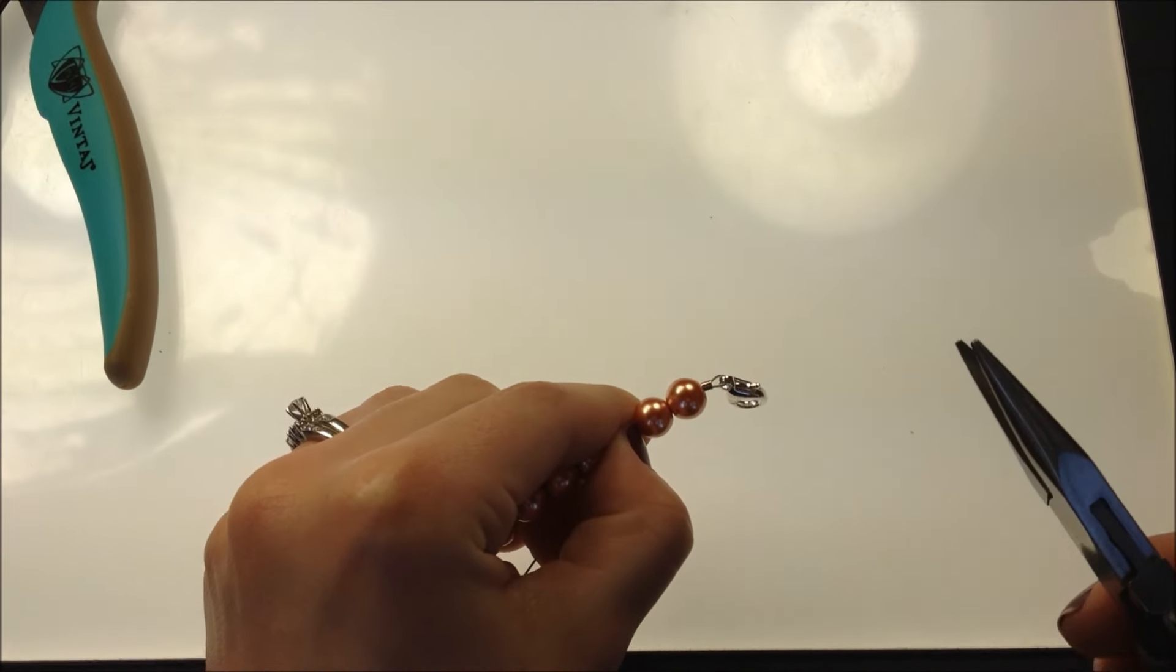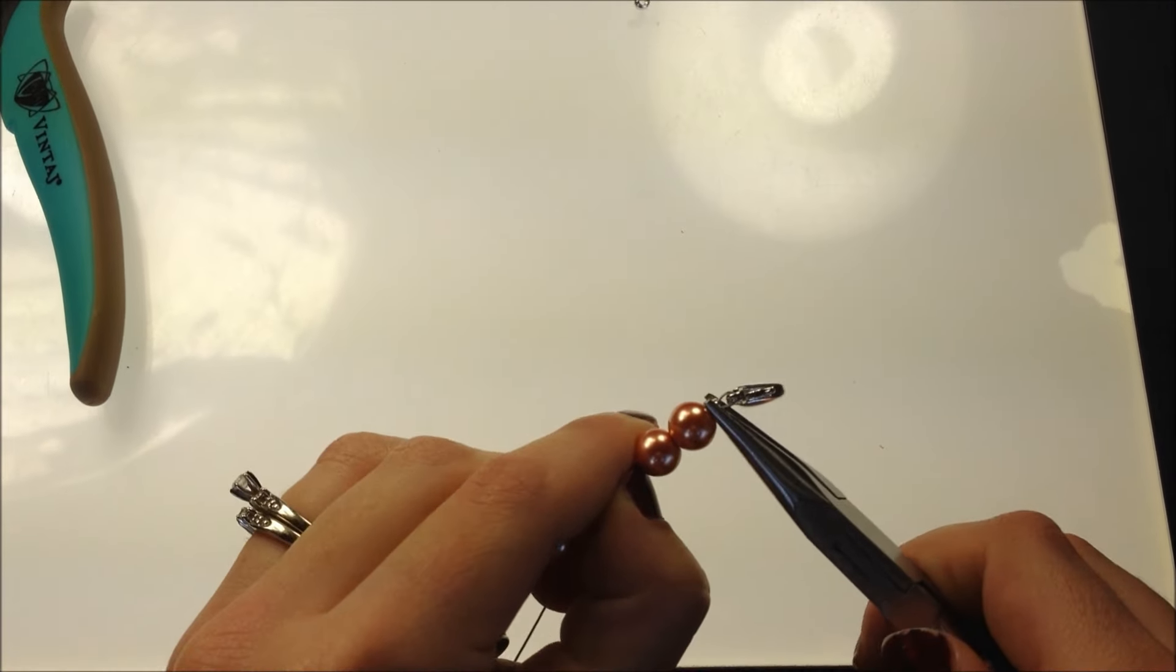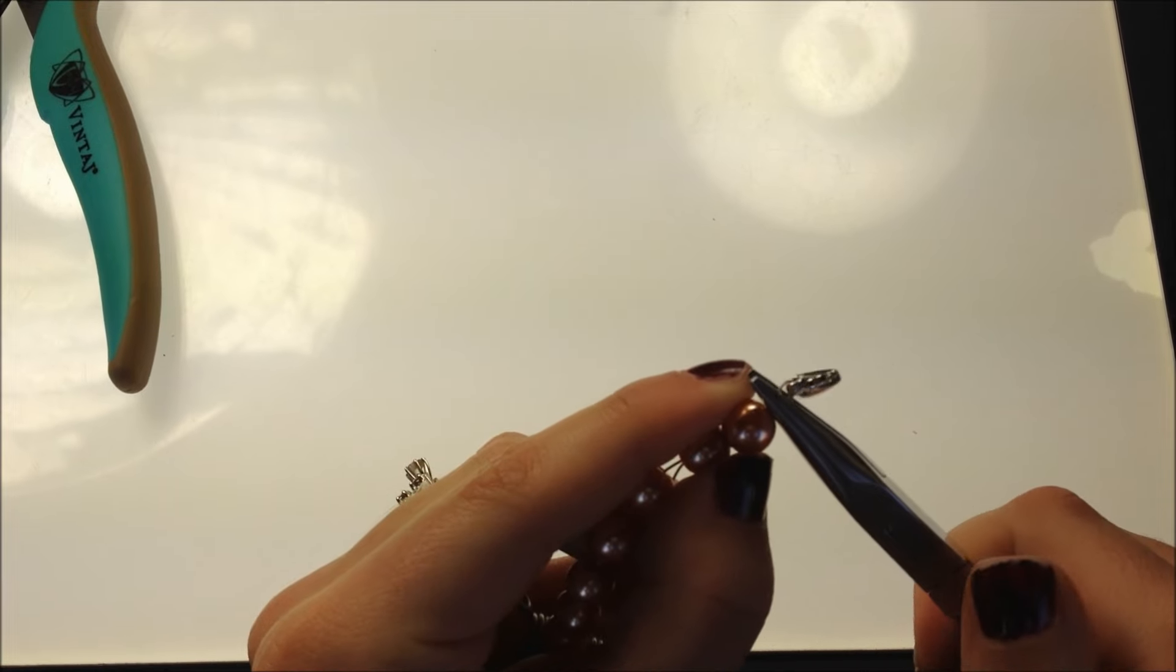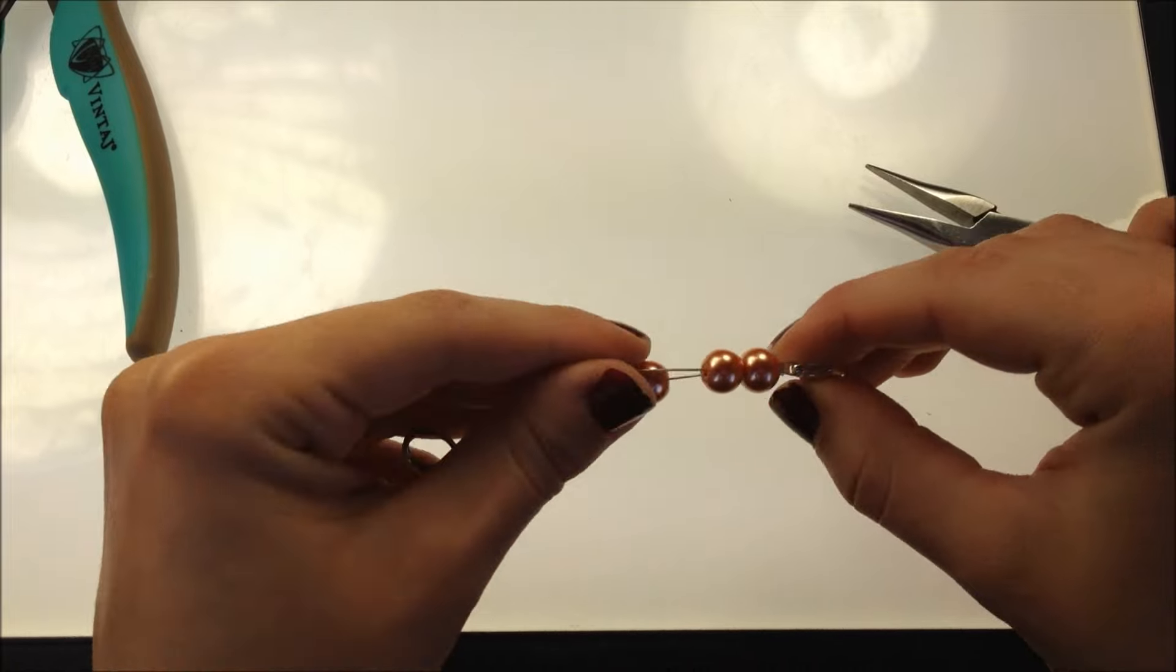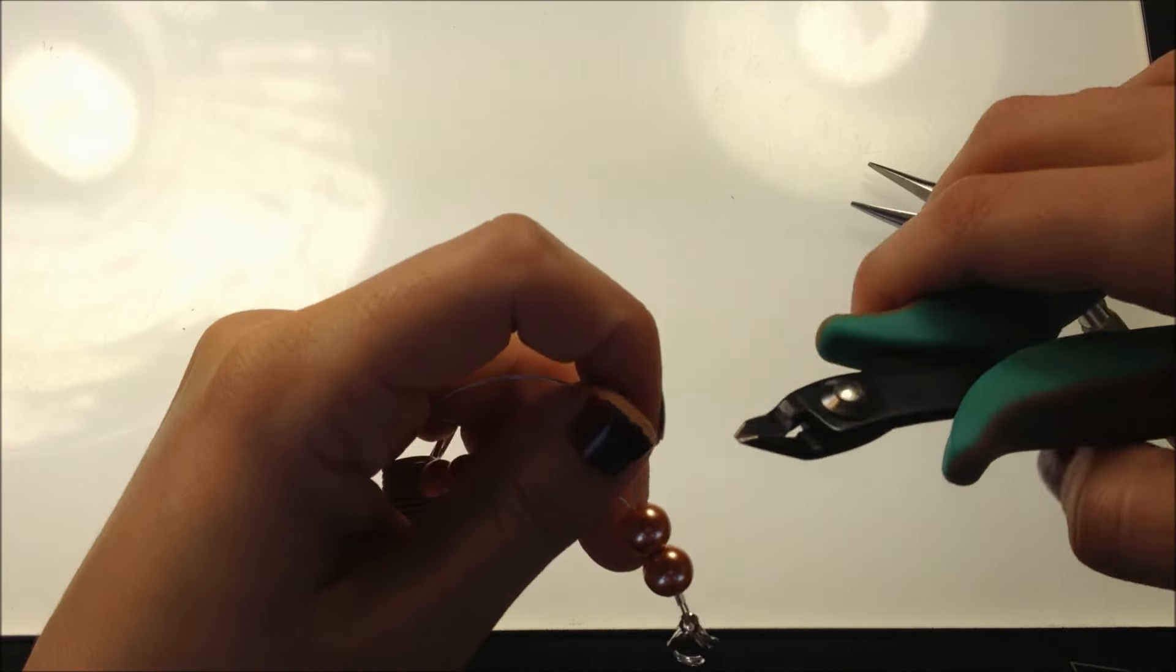You're going to take your flat nose pliers, take hold of the crimp bead, and squish it flat. A nice big squeeze will do. Then take your wire cutters and cut off the tail.